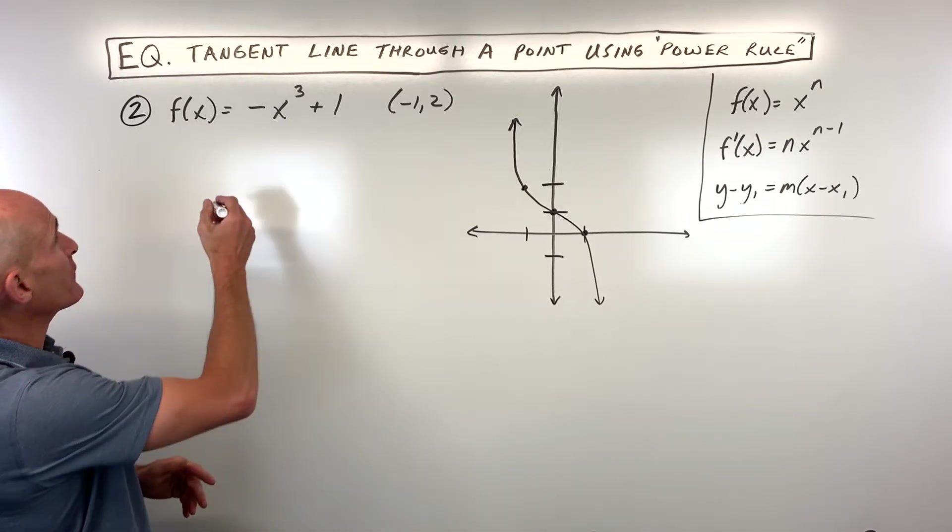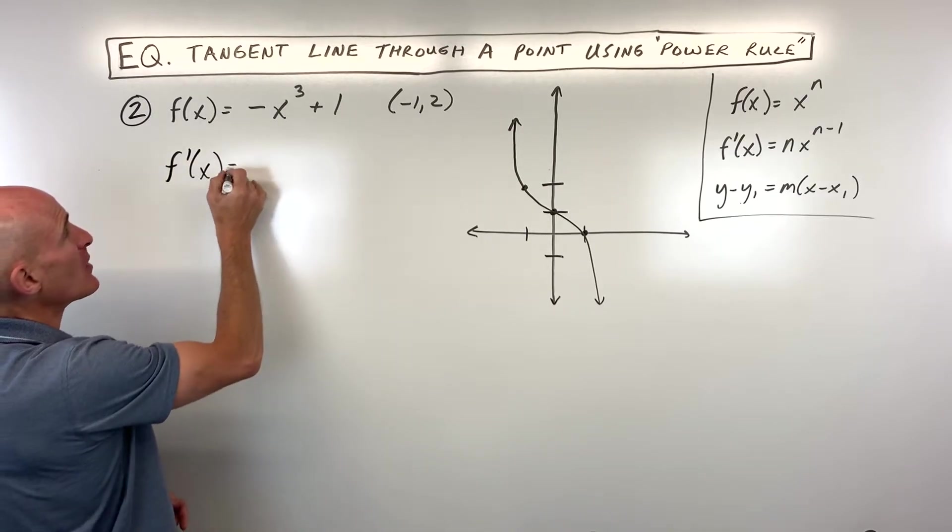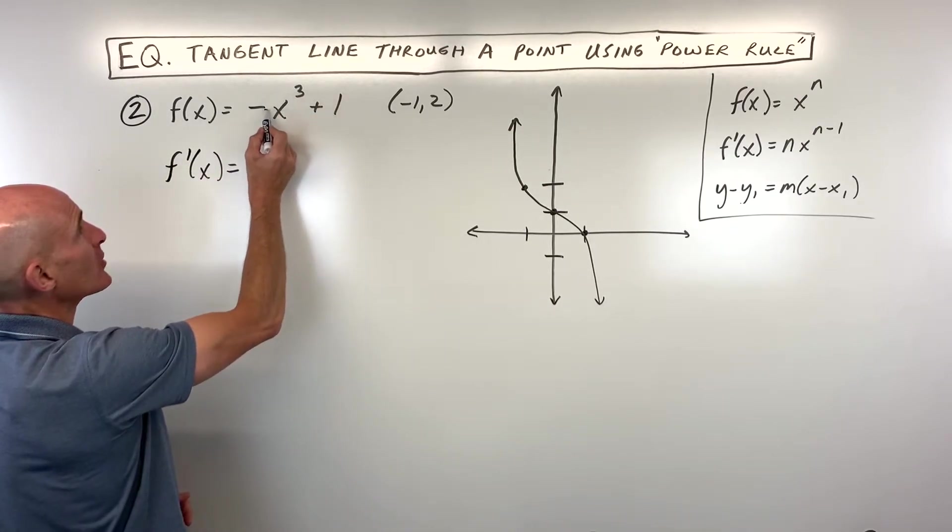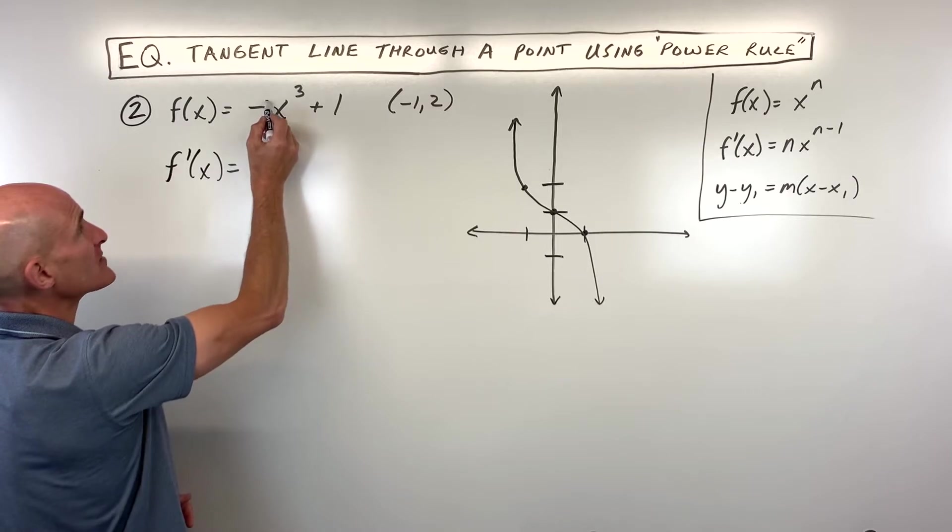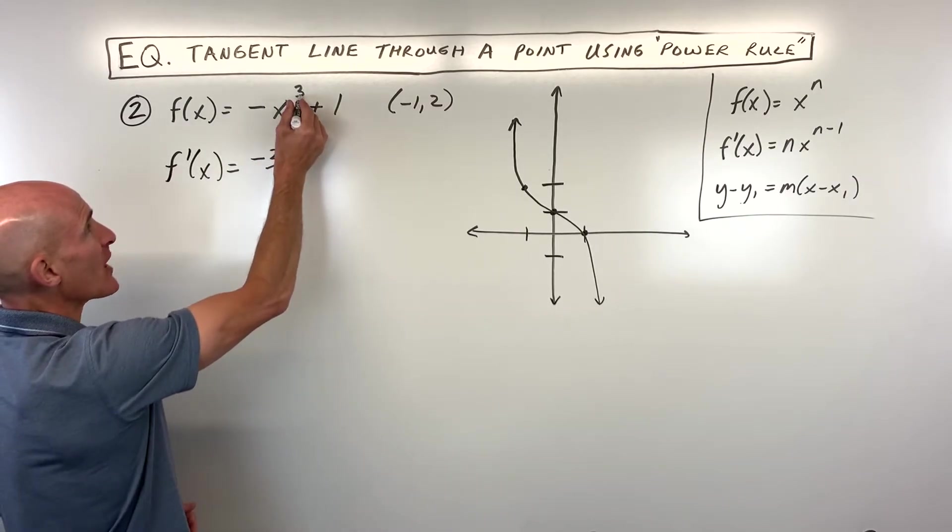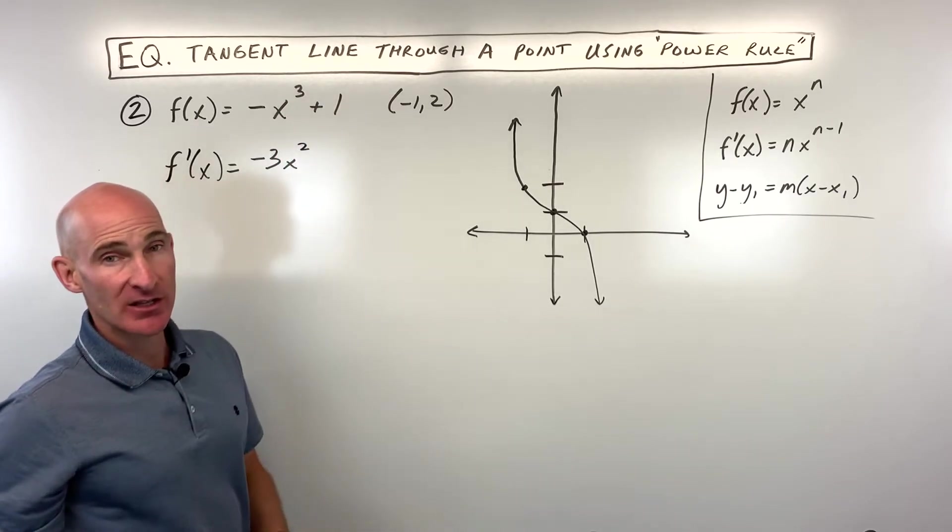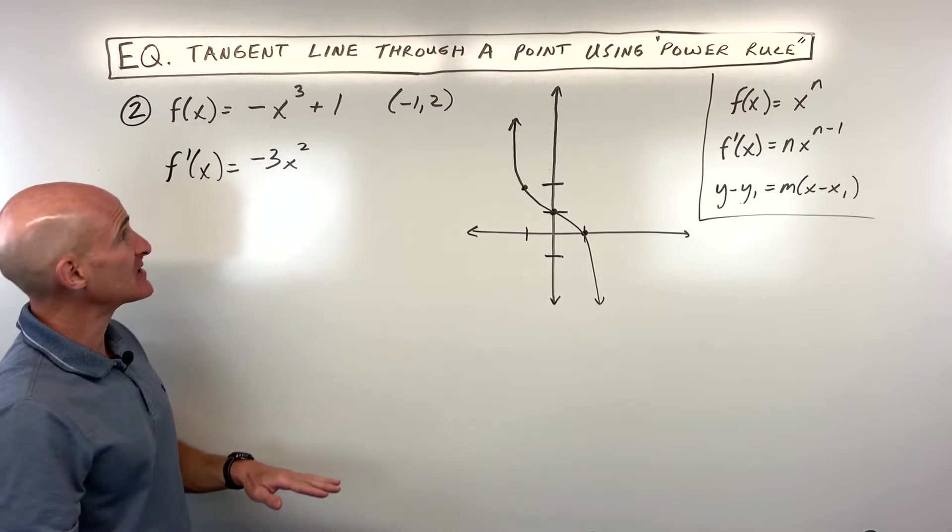The first thing I would do is take the derivative of this original function. We bring down the exponent. So 3 times negative 1 (this is understood to be a negative 1) gives us negative 3. We subtract 1 from the power there, so that becomes a 2. And the derivative of a constant, like just a number by itself, is 0, so that just cancels out.